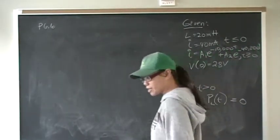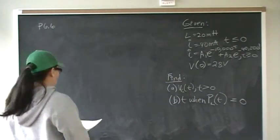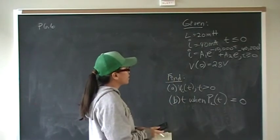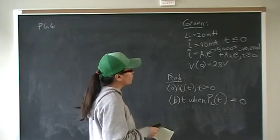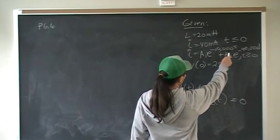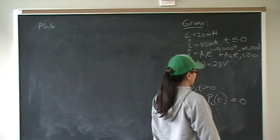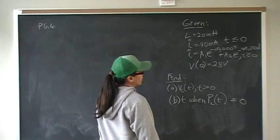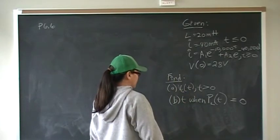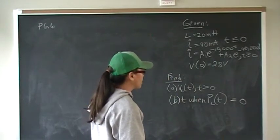This is chapter 6 and we're given some information. An inductor has inductance of 20 millihenries, current at time 0 is 40 milliamps, and the general equation for the current is A1·e to the negative 10,000t plus A2·e to the negative 40,000t. Voltage at time 0 is 28 volts. We want to find the general equation for the voltage of the inductor, and also find the time when power through the inductor is 0.